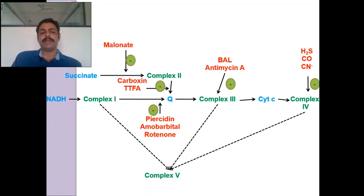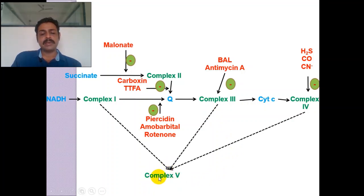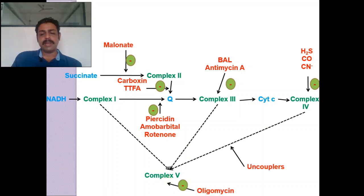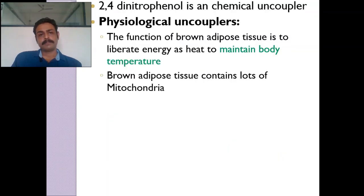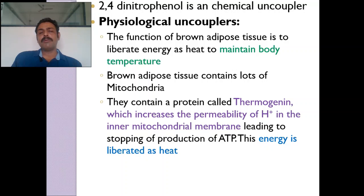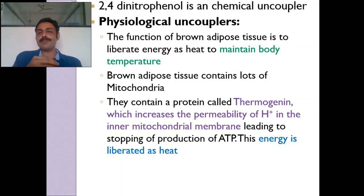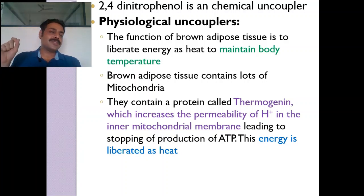Brown adipose tissue — have you ever thought why it is brown in color? Adipose tissue should be white because fat is white, but brown adipose tissue is brown because it contains a lot of mitochondria, which are brown in color. Why does it contain a lot of mitochondria? Not to produce energy — but for uncoupling, to produce a lot of heat. Brown adipose tissue is the area where heat is produced by keeping the electron transport chain going but inhibiting oxidative phosphorylation.